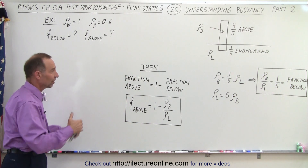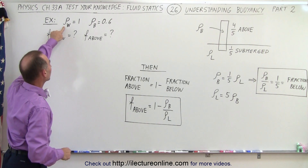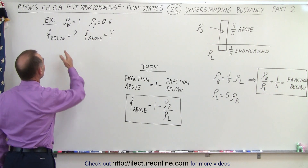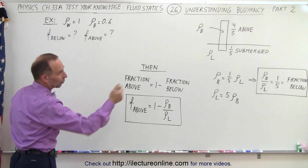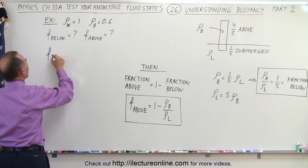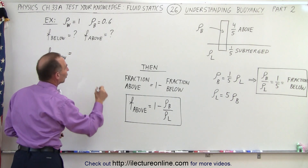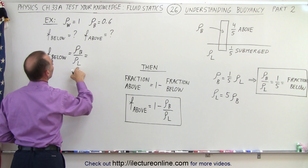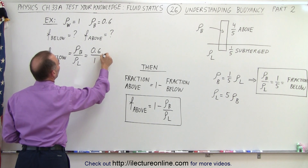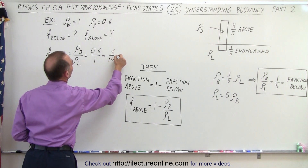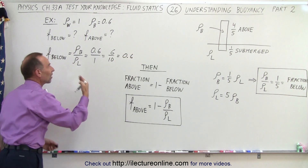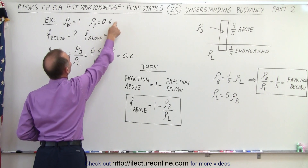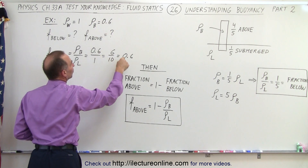Let's do an example. Say the liquid is water, so the density is 1, and the density of the block is 0.6. How do we find the fraction below and the fraction above? The fraction below equals the ratio of the density of the block divided by the density of the liquid — in this case 0.6 divided by 1, which equals 0.6. So 0.6 is the fraction of the object below the surface. When the liquid is water, whatever the density of the object is, that will be the fraction below the surface.